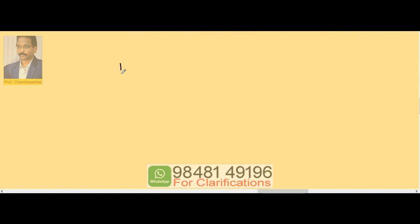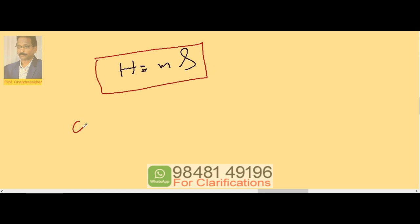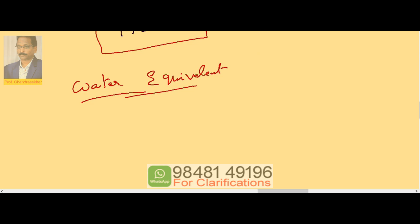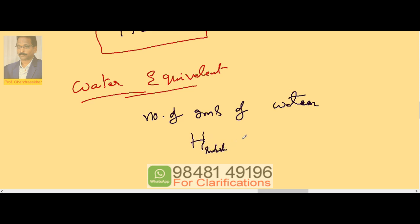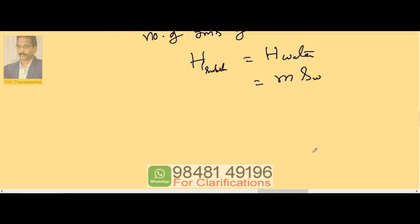Now, if we take H equal to MS, we can define a quantity called water equivalent. What is water equivalent? It is the number of grams of water which has the same heat capacity as that of the given substance. For the given substance, calculate the heat capacity H. Then find how many grams of water are required to have that same heat capacity. So H of the substance equals H of water, which means M times S of water.